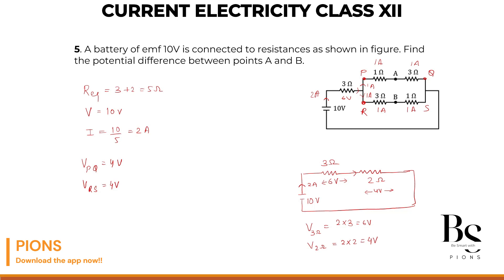To summarize: we have a 10 volt battery, of which 6 volt is split across the 3 ohm resistor and 4 volt across the parallel branch. The battery supplies 2 ampere total; 1 ampere goes through the upper branch (through P to A to Q) and 1 ampere through the lower branch. They recombine to 2 ampere and return to the battery. Voltage VPQ is 4 volt.